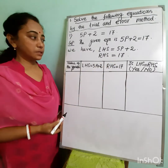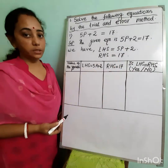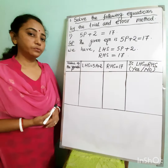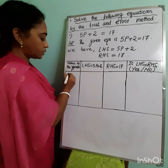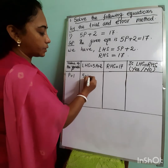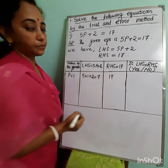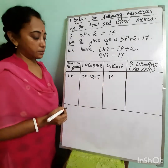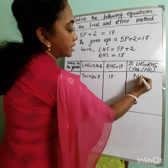The right hand side is 17, which is a natural number, and in the left hand side both terms of 5p + 2 are positive, so p will also be a natural number. We start with p = 1: left hand side becomes 5 × 1 + 2 = 7, and right hand side is 17. Since 7 ≠ 17, we write no.